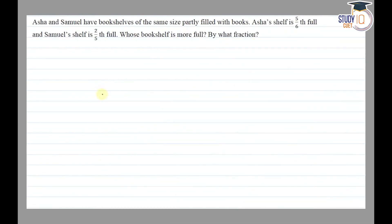Hello everyone, this question appears in Class 6th NCERT chapter of fractions, exercise 7.6, question 8. The question says that Asha and Samuel have bookshelves of the same size partly filled with books. Asha's shelf is 5 by 6th full and Samuel's shelf is 2 by 5th full. Whose bookshelf is more full, by what fraction?